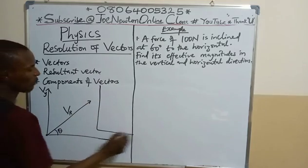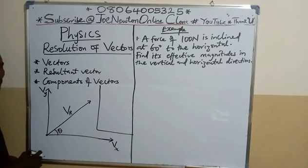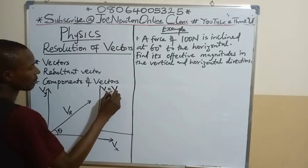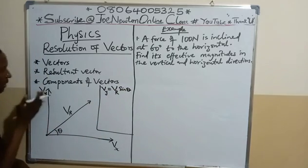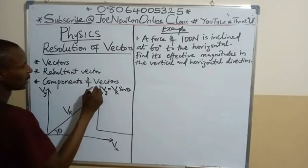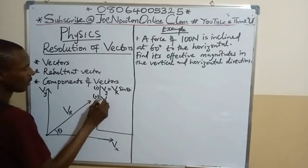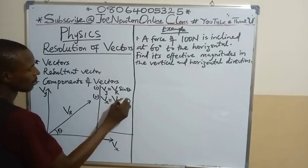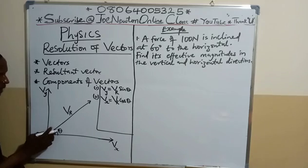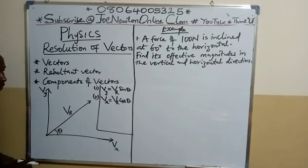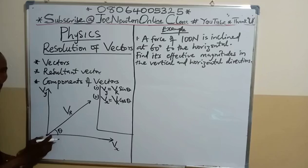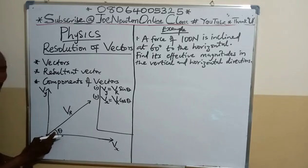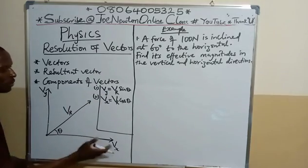How do we resolve this? For the vertical component, Vy equals Vr sin θ — that gives you the vertical component. For the horizontal component, Vx equals Vr cos θ. Here, θ is the angle that the resultant makes with the horizontal. Note that from vertical to horizontal is a right angle, 90 degrees. So if you are given the angle to the vertical, subtract it from 90 to get the angle inclined to the horizontal, which is used to resolve the vector in both directions.